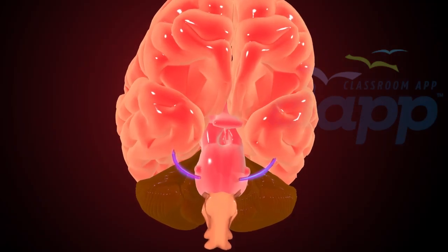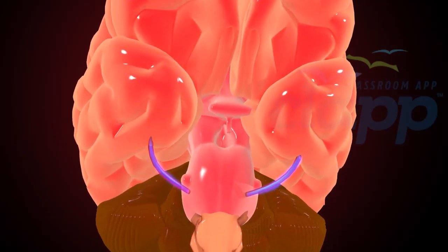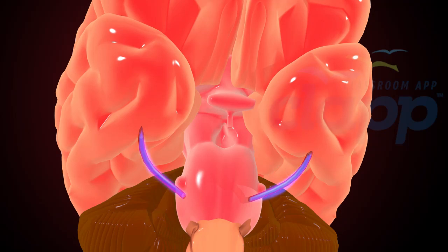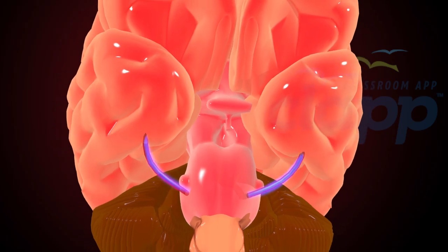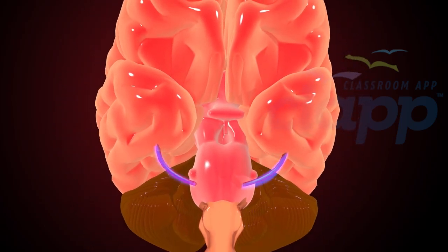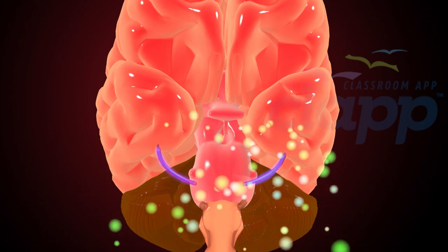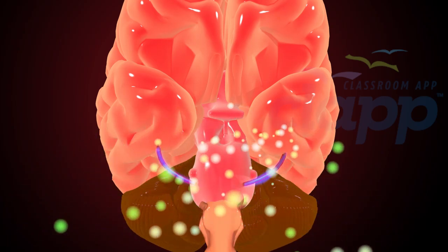One of the primary abnormalities in PCOS is the abnormal release of GnRH. Instead of being released in a regular cyclic manner, for an unknown reason, it is released at a higher pulse frequency. This increased pulse frequency leads to an increase in LH over FSH.